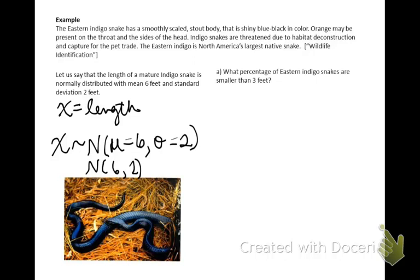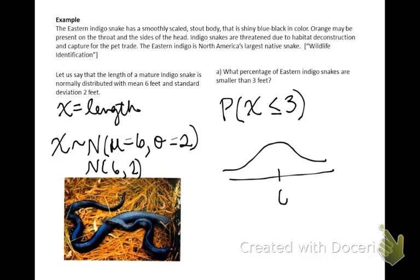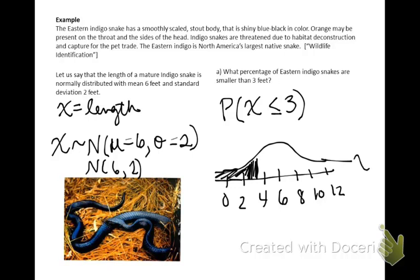For Part A, we want to know what percentage of eastern indigo snakes are smaller than 3 feet. We're looking for the probability that the snake length x is less than 3 feet. On the x-distribution, the center is at 6 and the standard deviation is 2. Finding the probability that it's 3 or smaller is what we're looking for. Our steps are to write it in terms of x, switch to a z-score, and look up a value in the table.